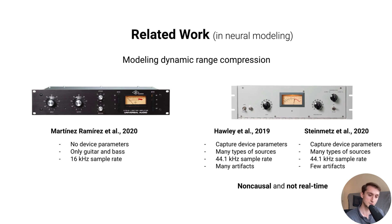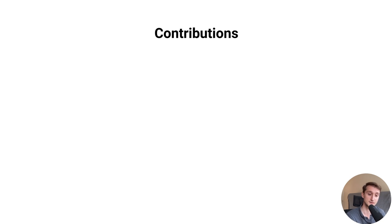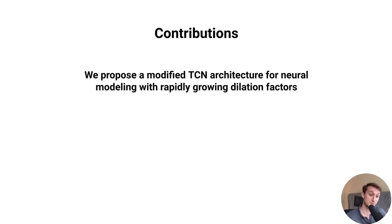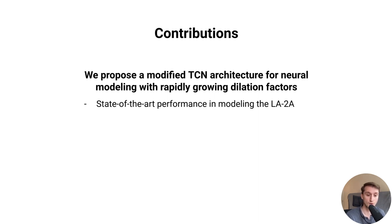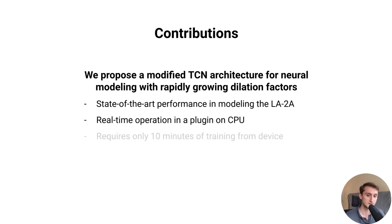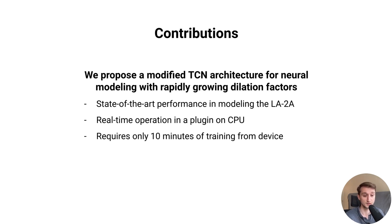To give the high-level overview of our contributions: we propose a modified TCN, or Temporal Convolutional Network, for neural modeling with rapidly growing dilation factors. This allows us to gain greater efficiency without much loss in performance, leading to on-par state-of-the-art performance on the LA-2A, real-time performance on CPU in a plugin, and the use of only 10 minutes of training data, whereas previous approaches used an entire dataset of 20 hours of recordings.